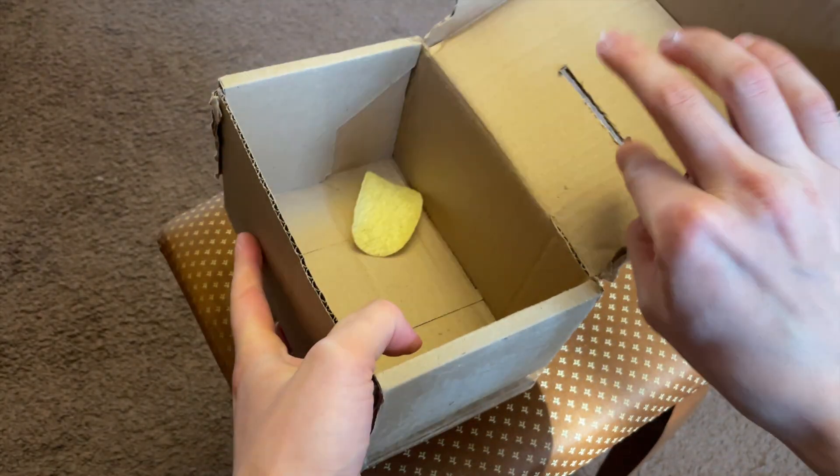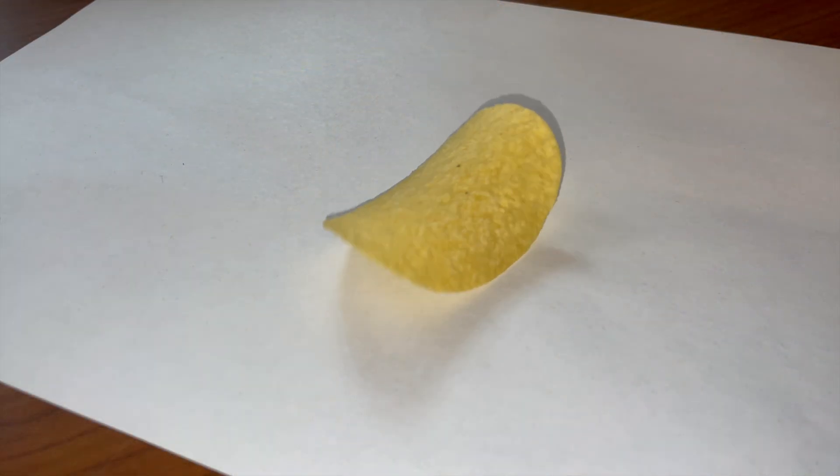Well, this shape is called a hyperbolic paraboloid because it is composed of parabolas and has hyperbolas in its cross-section.